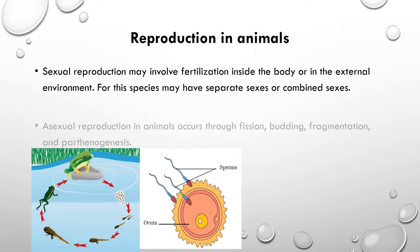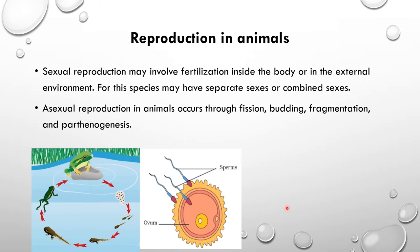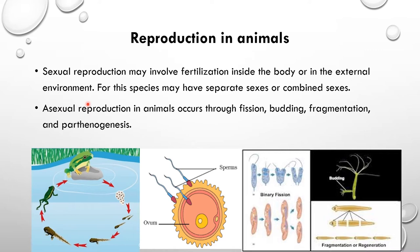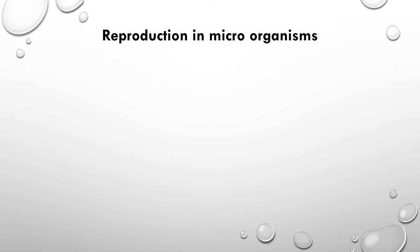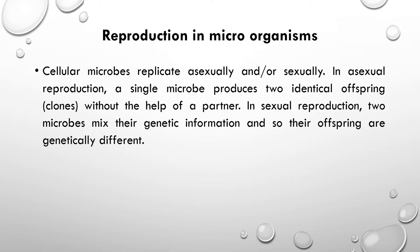Now let's see how asexual reproduction occurs in animals. There are a few methods: fission, budding, fragmentation, and parthenogenesis. I'm not going to explain each method here as these will be covered in future lessons. Microorganisms also show both sexual and asexual reproduction. In asexual reproduction of microorganisms, two identical offspring are produced by a single microbial cell.